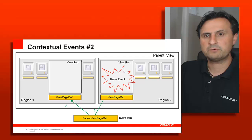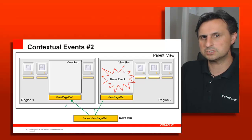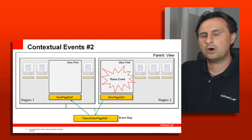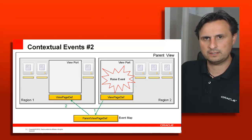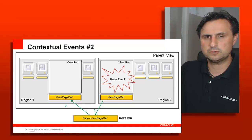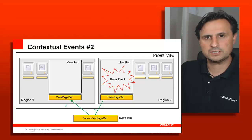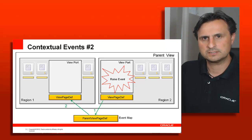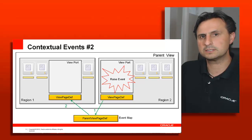The second example is the other way around — in region two an event is raised and it's region one now responding to it. On the page definition file that has the mapping, you will identify an event receiver, a subscriber, and the sender of an event. The sender could be a named sender, which is typically the case if both regions share the same parent, or you would use an asterisk — a wildcard producer.